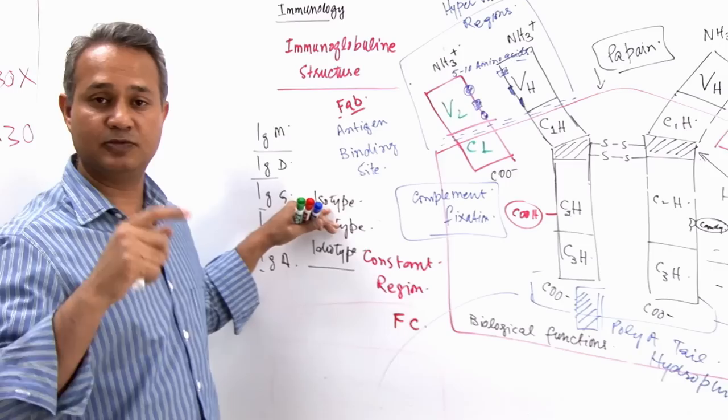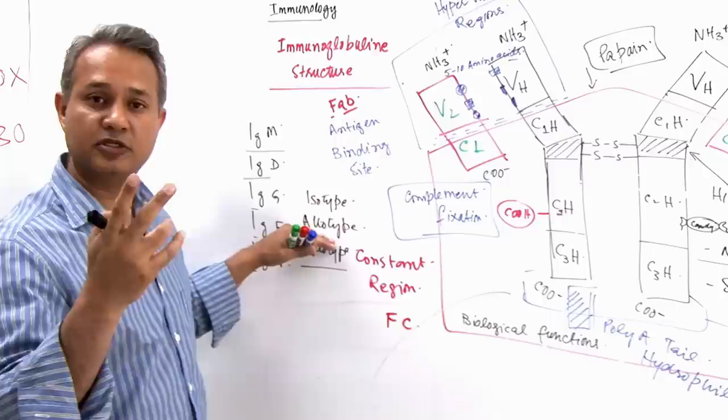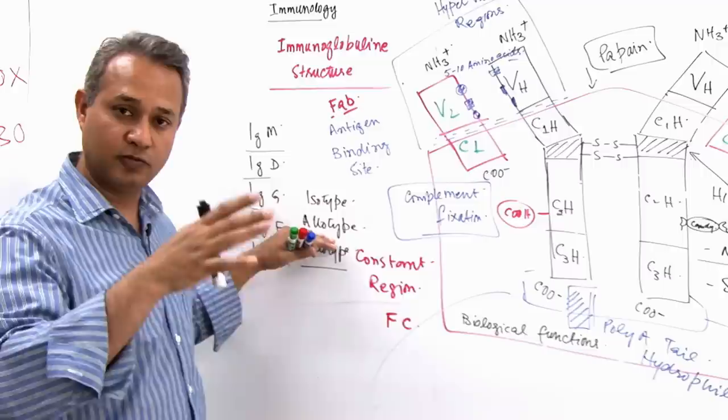Now, allotype. Immunoglobulins that are different between two individuals of the same species. So, you and I. Species human, hopefully, if I do not have some leopards and lions listening to me.